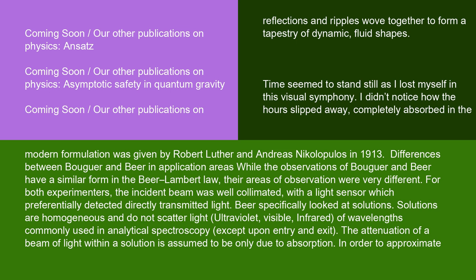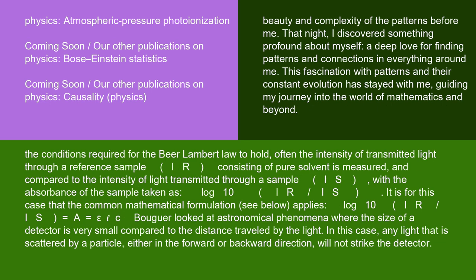In order to approximate the conditions required for the Beer-Lambert Law to hold, often the intensity of transmitted light through a reference sample IR — consisting of pure solvent — is measured and compared to the intensity of light transmitted through a sample IS, with the absorbance of the sample taken as log₁₀(IR/IS). It is for this case that the common mathematical formulation applies: log₁₀(IR/IS) = A = εcℓ.